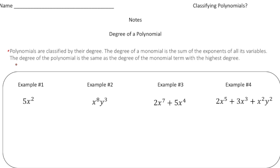So it says polynomials are classified by their degree. The degree of a monomial is the sum of the exponents of its variables. Please underline the word sum and then exponents.